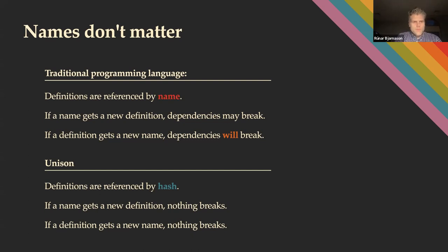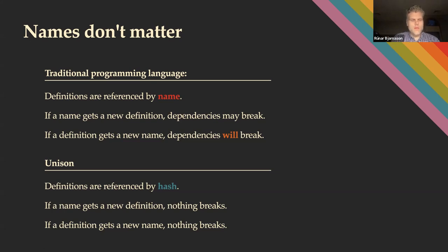Hashes allow us to unambiguously communicate code both across time and across space - over networks, memory boundaries, and across revisions of things. It also allows different versions to coexist.